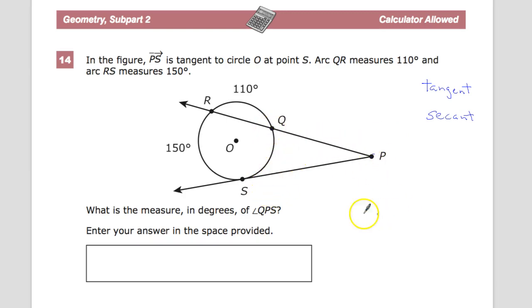So, in this case, the measurement of angle QPS is equal to one half. And you'll want to put the one that's further away usually first, so you'll have a positive number, so the bigger one. RS minus the smaller one, which is QS.